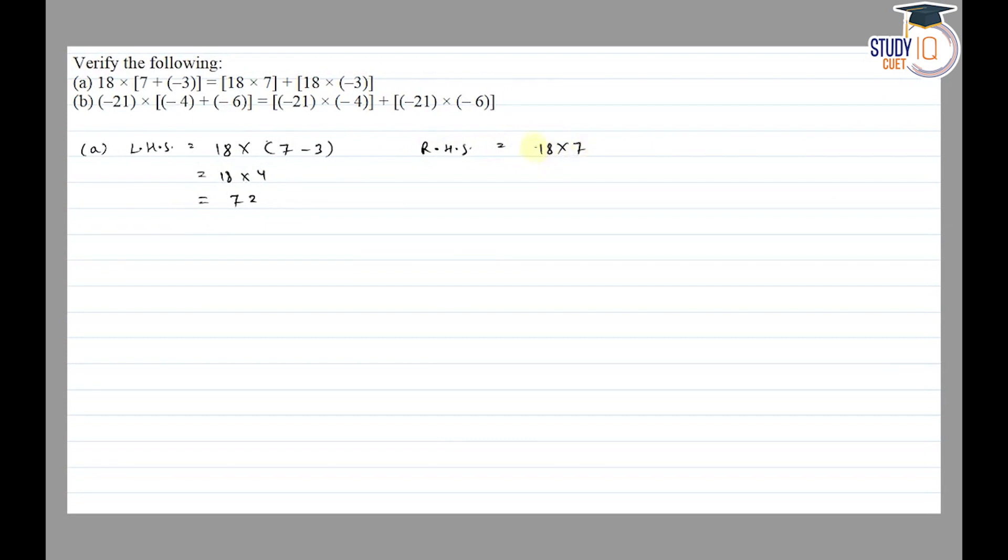Is equal to 126 plus minus 54. So 126 minus 54 is equal to 72.